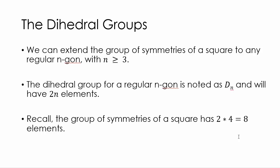Well, we can extend the group of symmetries of a square to any regular polygon with sides three or greater. And we're going to call them n-gons, but it's just a polygon where n is the number of sides. So a dihedral group for a regular polygon is noted as d sub n. And regular is important here. Regular means that all the sides are the same size. And any n-gons will have two times n many elements. So a five-sided polygon, a pentagon, will have ten elements just like we saw a four-sided regular polygon, a square, had eight elements.